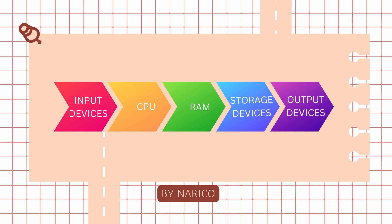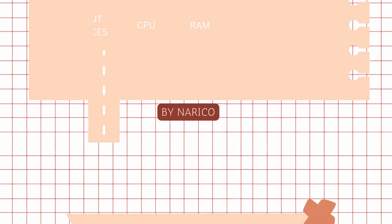Step 4: Output stage. Finally, the processed data is sent to output devices to be presented to the user. Examples include monitors, printers, and speakers. These devices convert digital signals back into a human-readable or perceivable form, such as text on a screen, printed documents, or audio output.